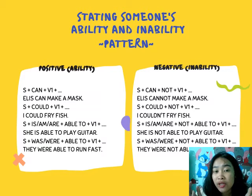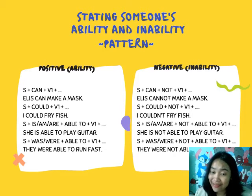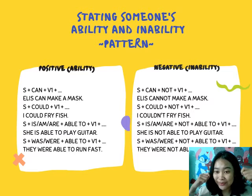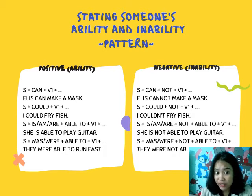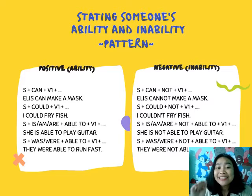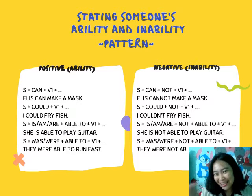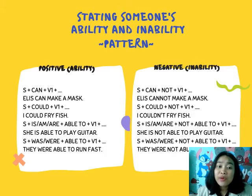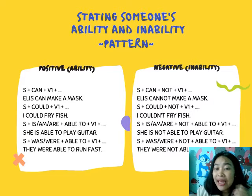Examples of each pattern: First — 'Alice can make a mask' (Alice dapat membuat sebuah masker). Second — 'I could fry fish' (Saya bisa menggoreng ikan). Third — 'She is able to play guitar' (Dia bisa bermain gitar). Last — 'They were able to run fast' (Mereka bisa berlari cepat).